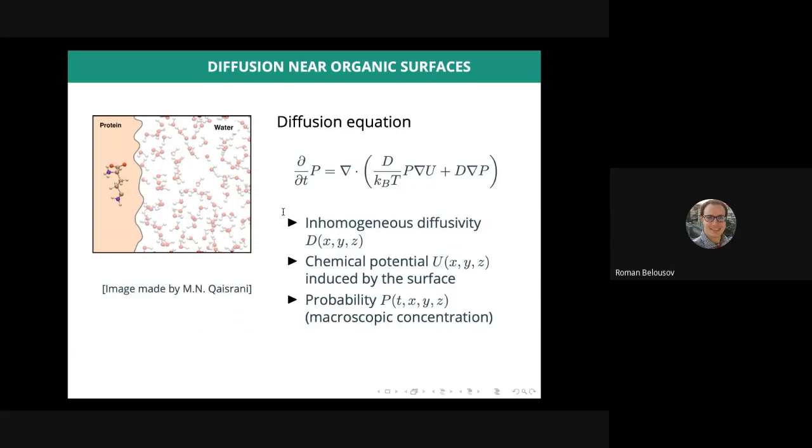To model the inhomogeneous diffusion, we use the Smoluchowski equation, or sometimes this equation is also called the Fokker-Planck equation. This diffusion equation relates the evolution of the probability density P of finding a molecule at a given point in space, or in macroscopic terms the concentration of the substance, to the divergence of the matter flow caused by gradients of the potential U and by the gradient of the concentration itself P.